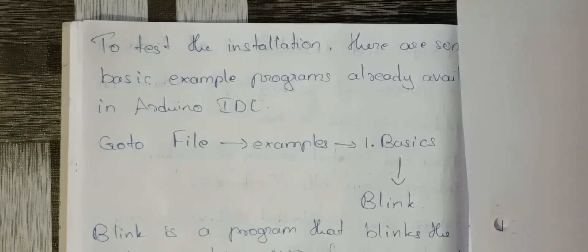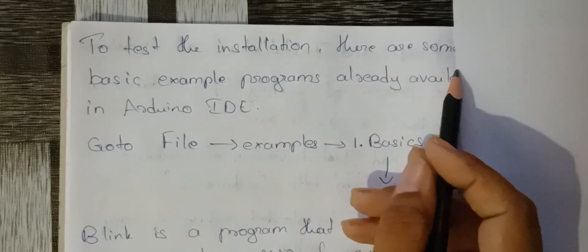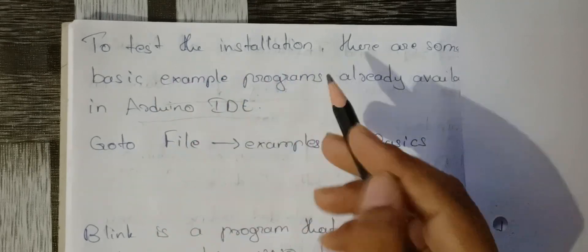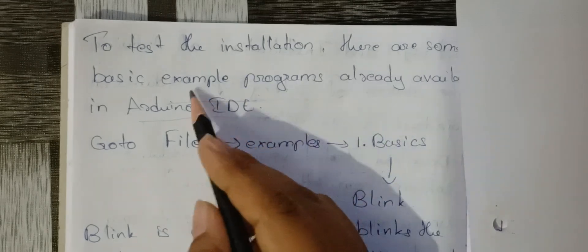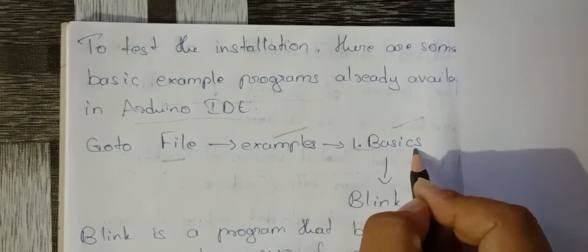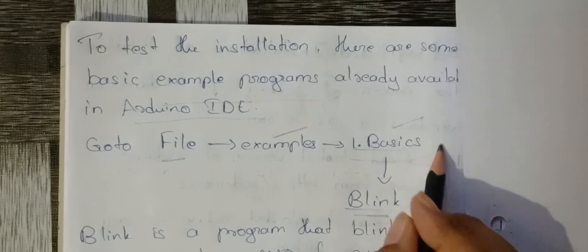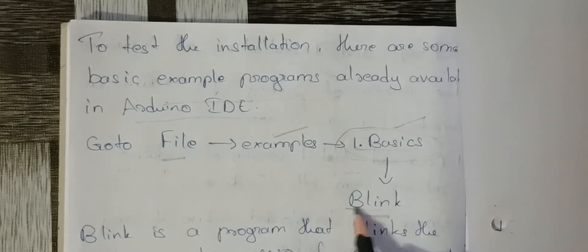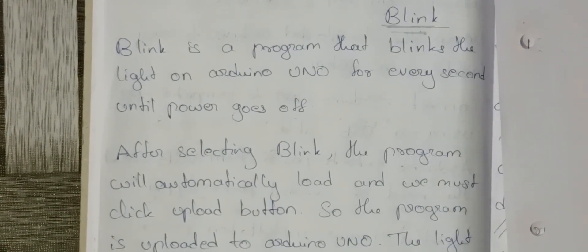To test the installation, there are some basic example programs already available in Arduino. Click on File, then Examples, then Basics, and select the Blink option. We will test the Blink program because the Arduino board has an onboard LED light.